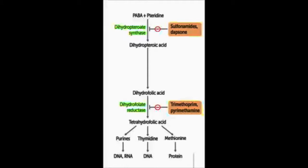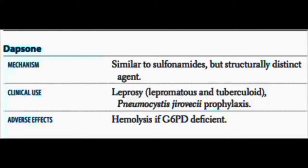The first one we're going to talk about is Dapsone. Dapsone is similar to a sulfa drug — it's a PABA analog. It inhibits dihydropteroate synthetase, which basically blocks the formation of folate. We give it for leprosy and for Pneumocystis pneumonia. One thing we have to worry about as an adverse effect is that it puts oxidative stress on the cell.